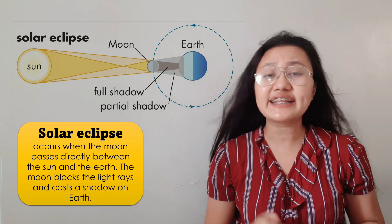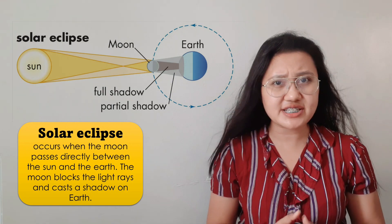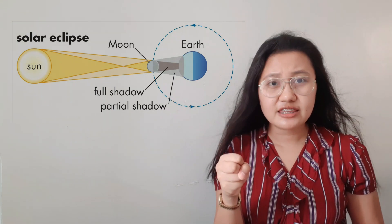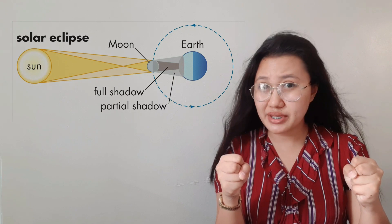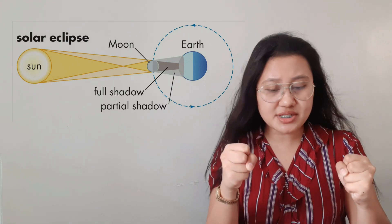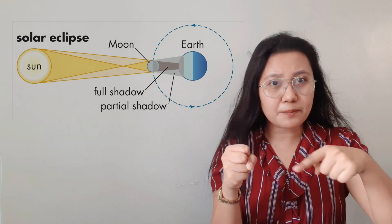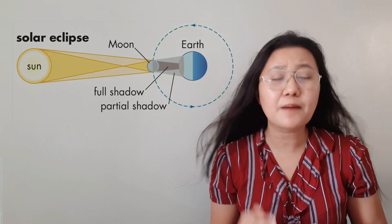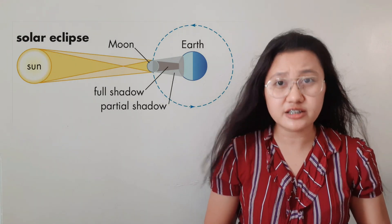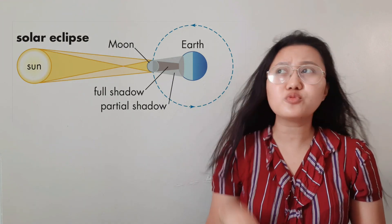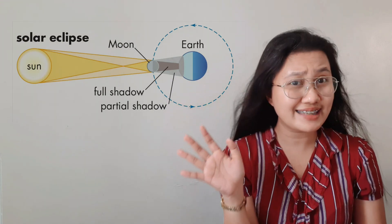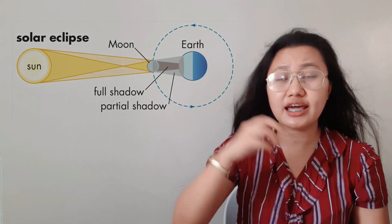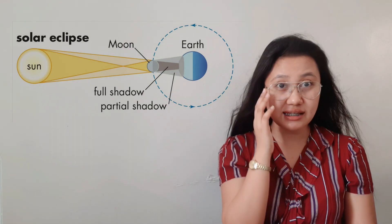The moon blocks the light rays and casts a shadow on Earth. In SME, the moon is in the middle — it passes between the sun and the earth. So during a solar eclipse, it's as if it suddenly gets dark because the moon is blocking the sun from between the earth and the sun. That is what we call a solar eclipse.